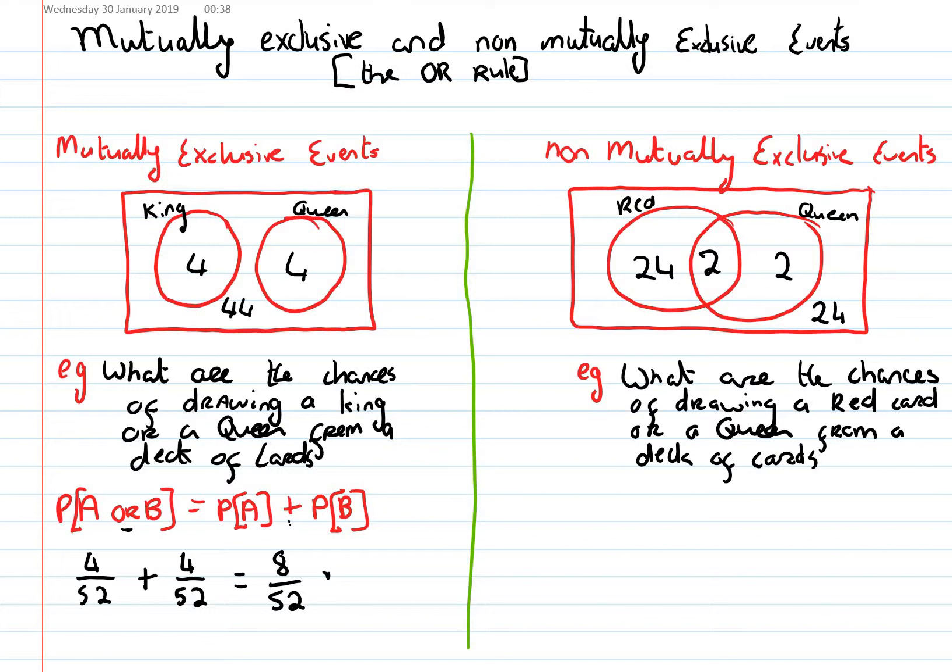So, the first thing I'm going to do, we have a formula for it, and it's the probability of A or B equals. It starts off the same as mutually exclusive events. It's the probability of A plus the probability of B minus the probability of A and B.